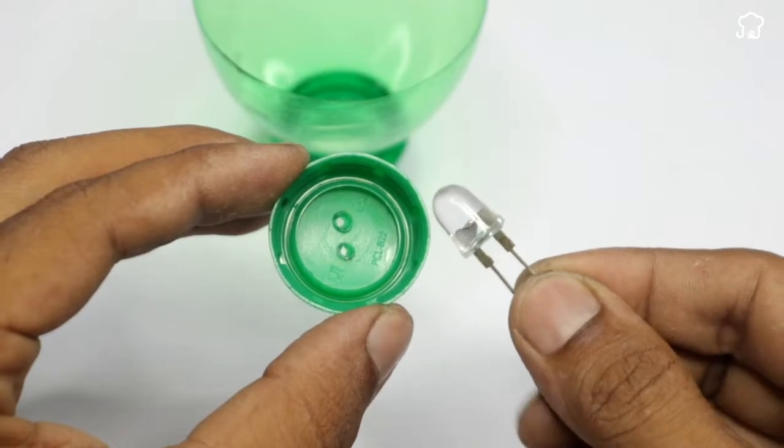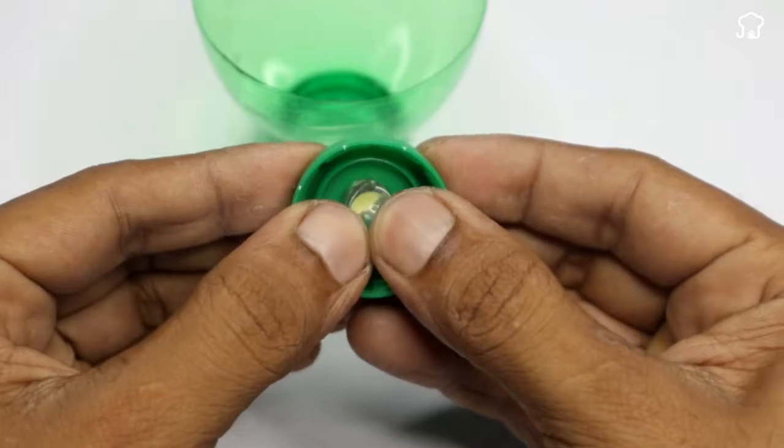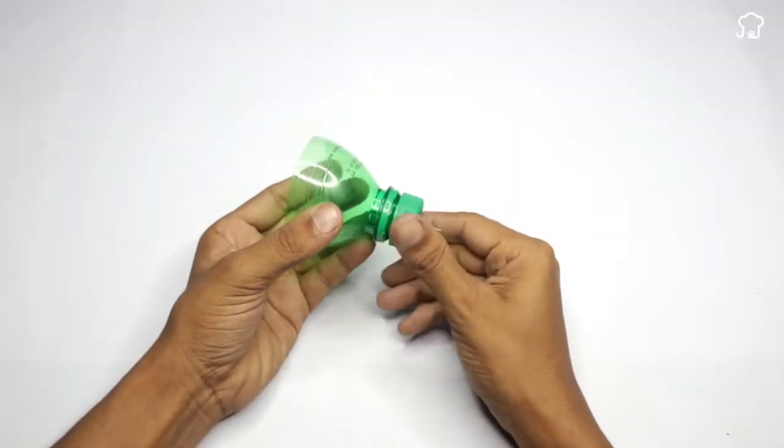Then, we will take an LED electronic bulb, and we will pass it through the two holes. We screw the lid back on.